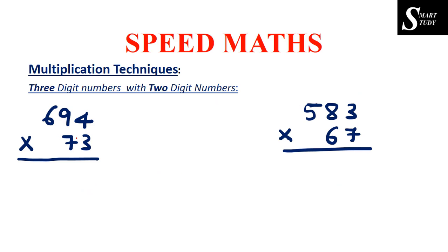For example, let's say we have to multiply 694 with 73. Multiplication of a three digit number with a two digit number is as good as multiplying two three digit numbers. What we need to do is convert this two digit number — 73 — into a three digit number by simply placing a zero in front of it. The reason is that once this number becomes a three digit number, we can apply the same five step procedure used for three digit multiplication.